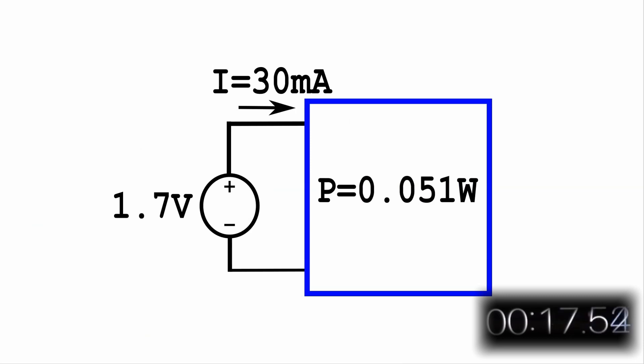So for example, if you have 1.7 volts across this box and have 30 milliamps into it, the power consumed is 1.7 volts times 0.03 amps, which is 0.051 watts. And this is true regardless of whether it's a transistor, vacuum tube, diode, resistor, or even an entire electronic circuit inside that box.